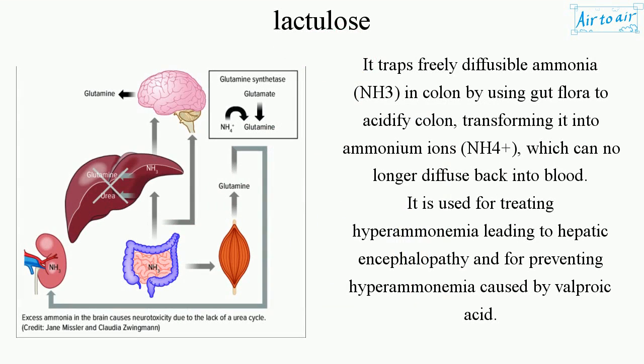It traps freely diffusible ammonia (NH3) in the colon by using gut flora to acidify the colon, transforming it into ammonium ions (NH4+), which can no longer diffuse back into the blood. It is used for treating hyperammonemia leading to hepatic encephalopathy and for preventing hyperammonemia caused by valproic acid.